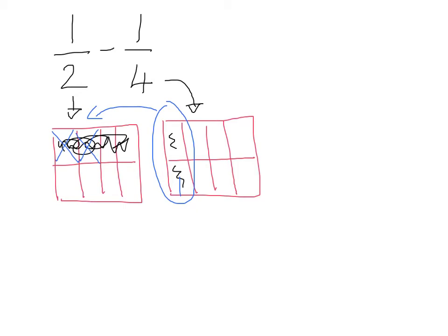After subtracting two rooms, I am left with two rooms that are still occupied. So my answer to this fraction is two over the total number of rooms. Each floor has four rooms, and four times two is eight rooms total, so the answer is two eighths. You know that can be simplified — both numbers can be divided by two — so my answer is one-fourth.